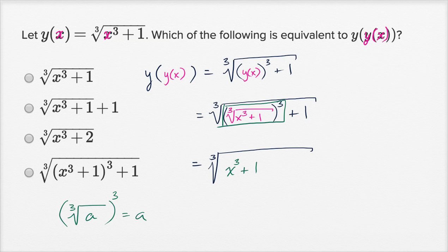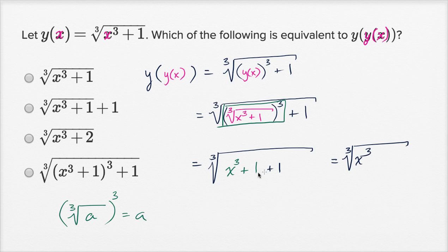And then we have the plus one. So this is going to be equal to the cube root of x to the third plus two — which is that choice right over there.